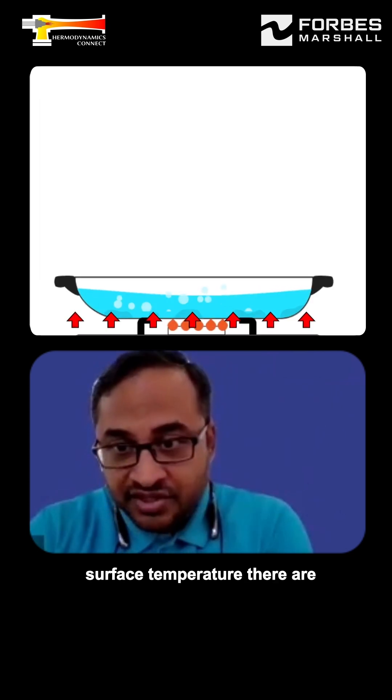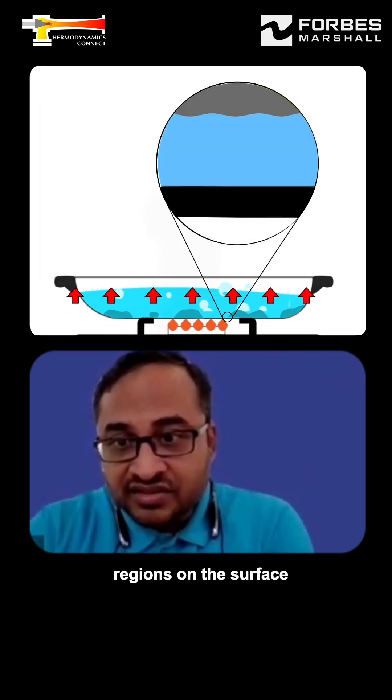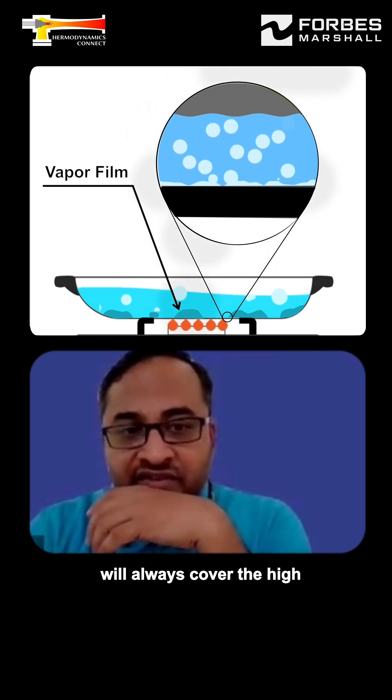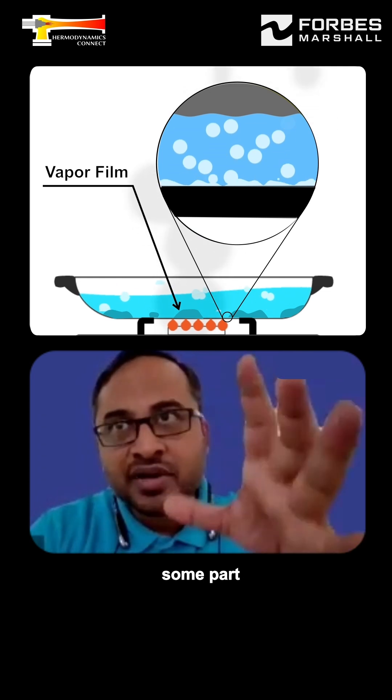Because if you keep increasing the surface temperature, there are regions on the surface where the liquid never comes in contact. Some part of the vapor film will always cover the high temperature, some part.